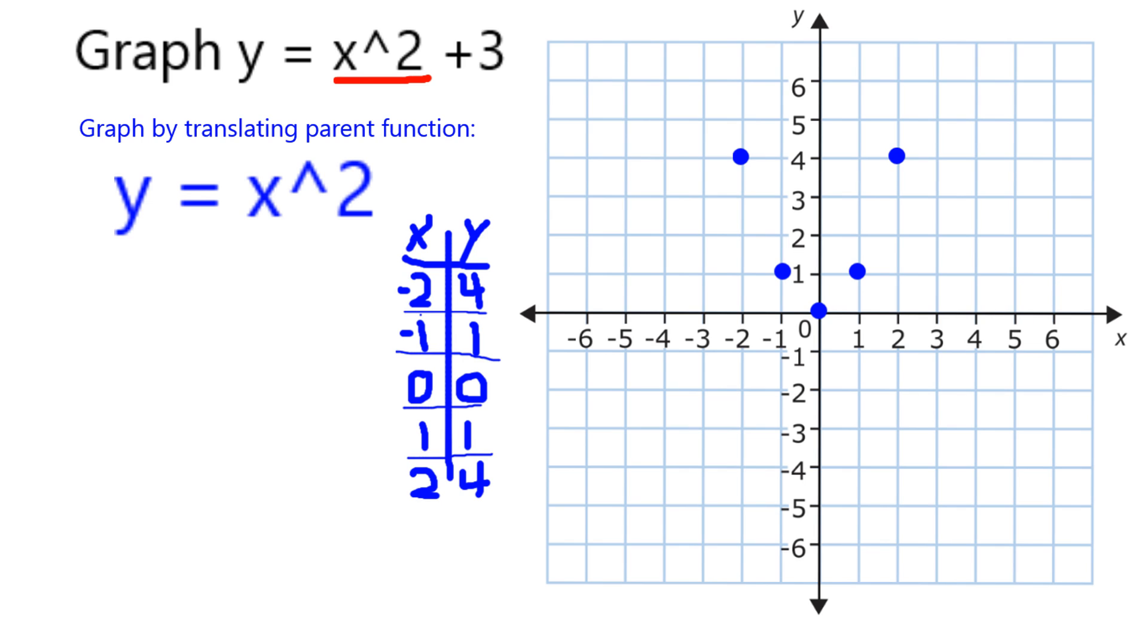So we can see that this function that we originally looked at is the same thing except we add 3. And the effect that adding 3 has is it's going to shift all our points up by 3.